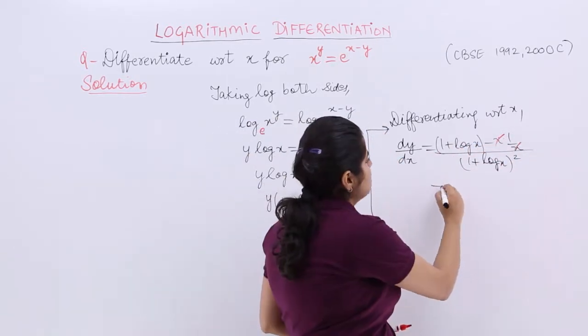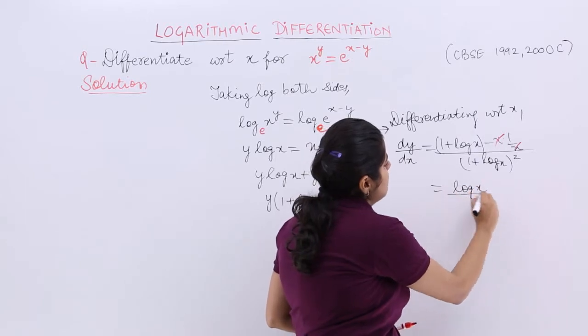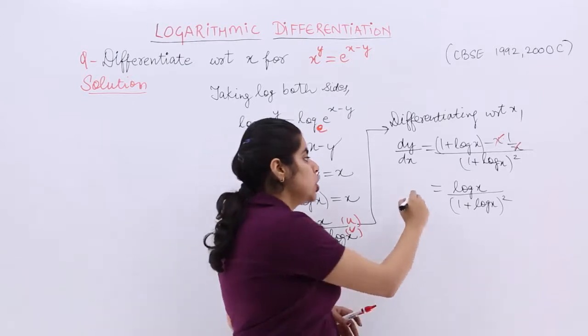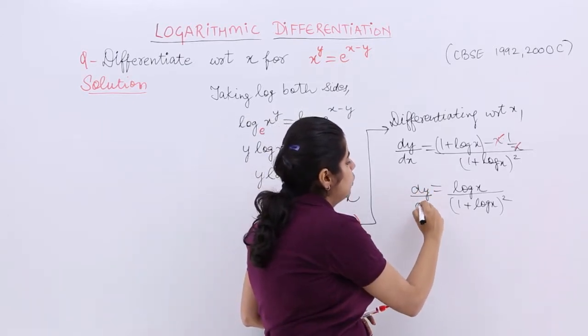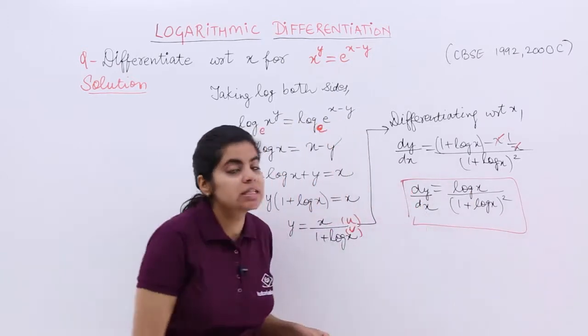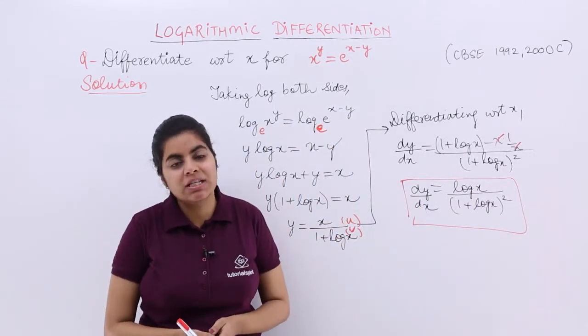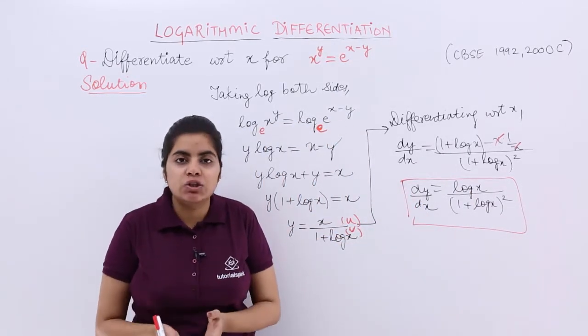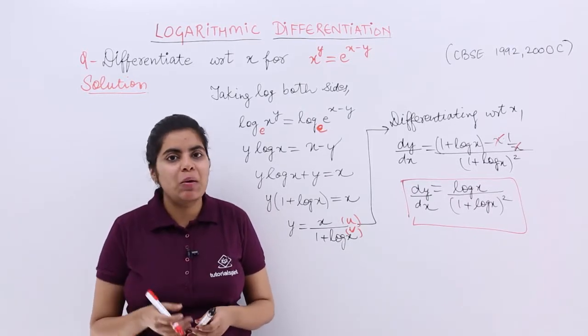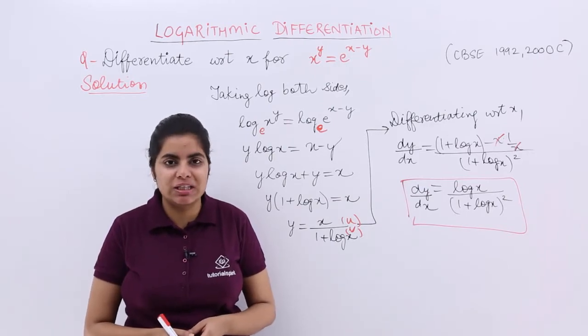1 plus 1 minus. So it is log x upon 1 plus log x whole square. And that is the answer to this question. The value again we have found out for dy by dx. I write this as answer in a box. So you see that the topic is very important. The only key to understand it first and then practice many questions based on it.